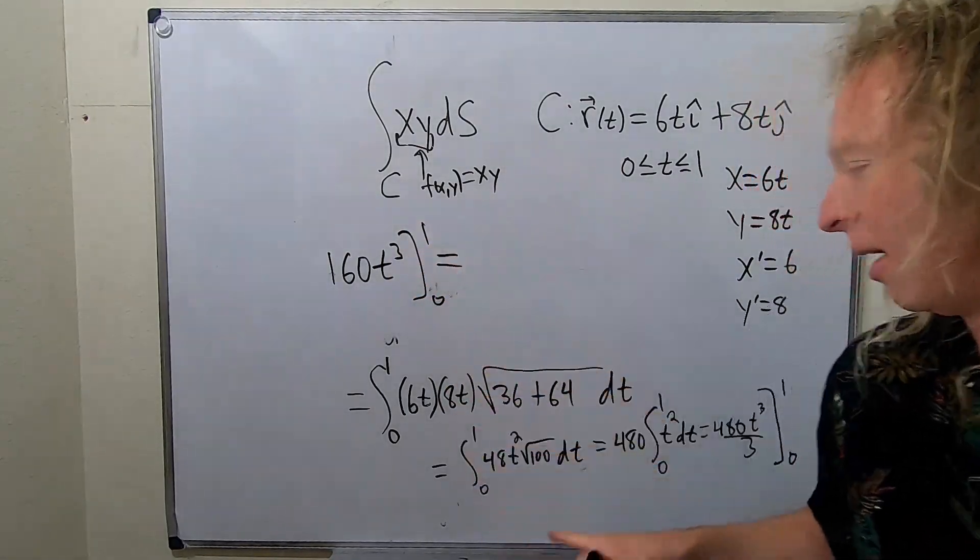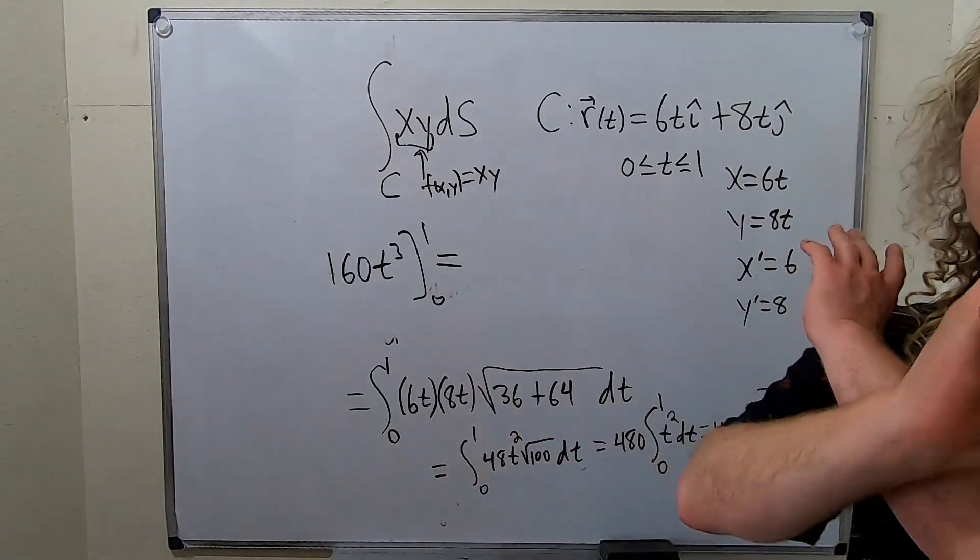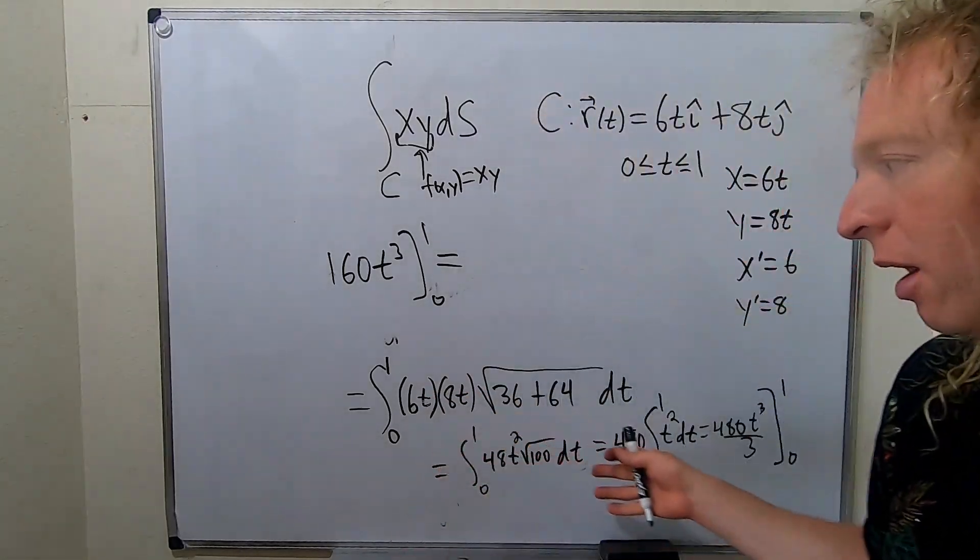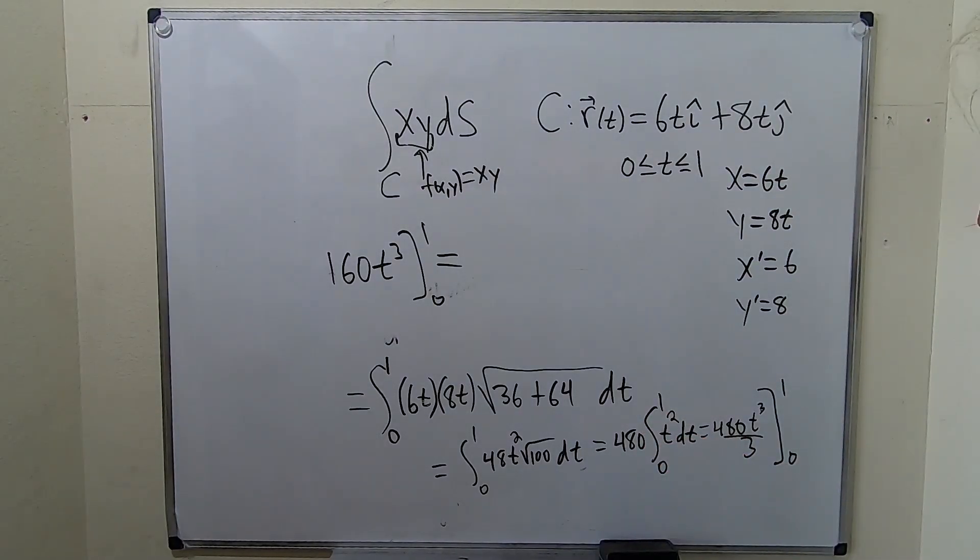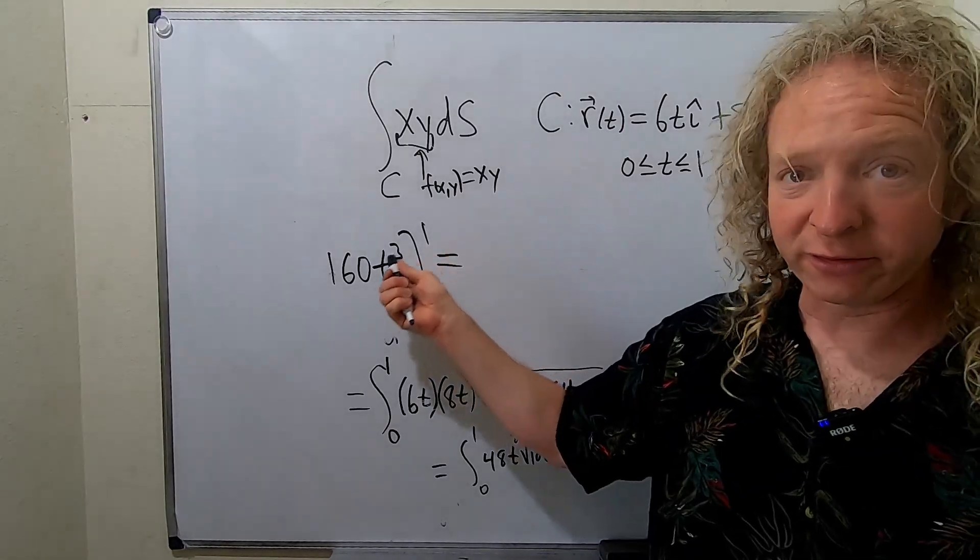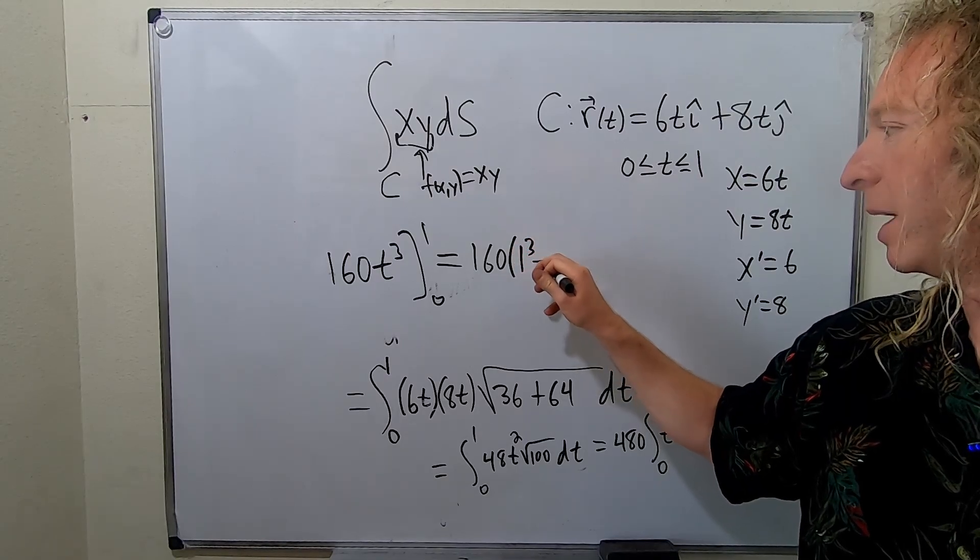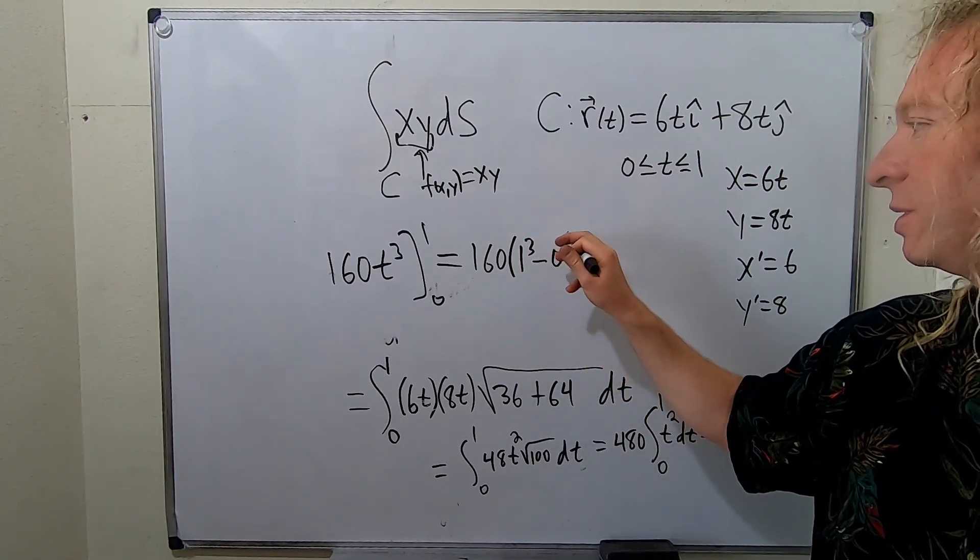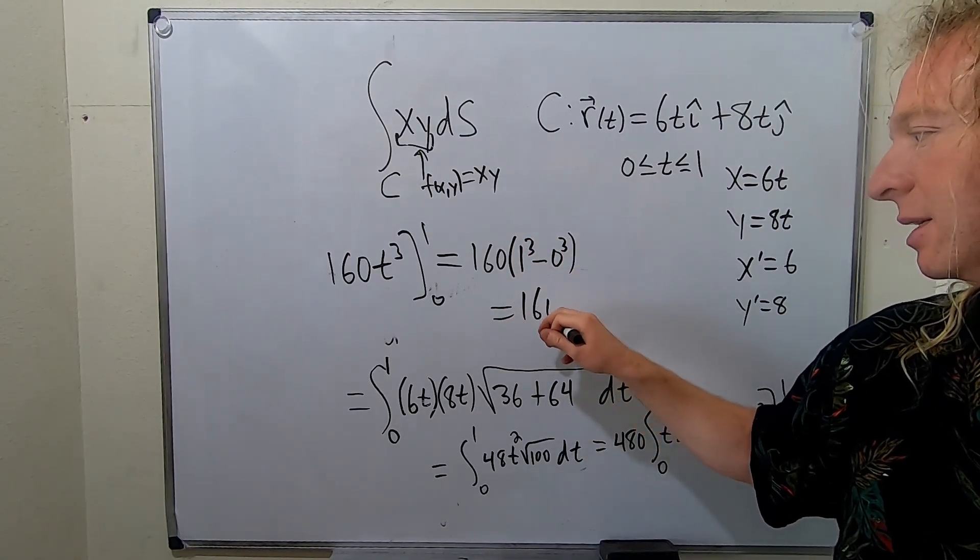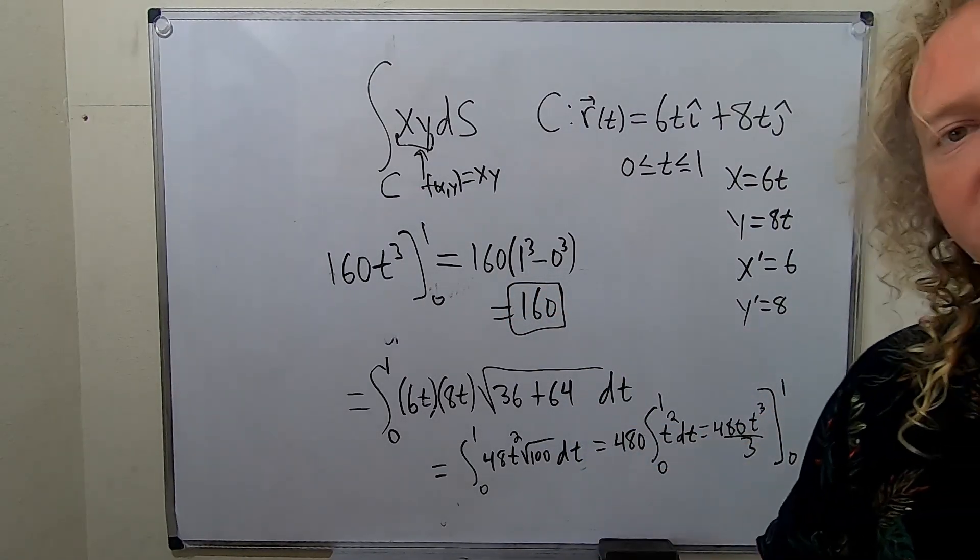Really easy to mess up. So you see how easy it is to mess up. Little mistakes like that happen all the time. So always just take your time if you're doing this for a class or something. So be really careful. We plug in the 1 first. So we get 160. 1 cubed. Minus. And then plug in the 0. 0 cubed. So we just get 160. And that is the final answer. I hope this video has been helpful. Take care.